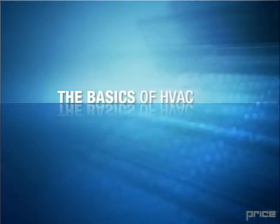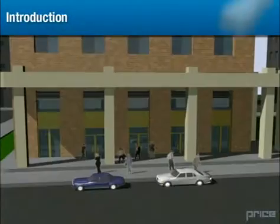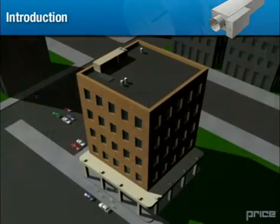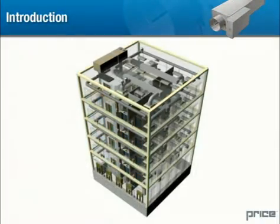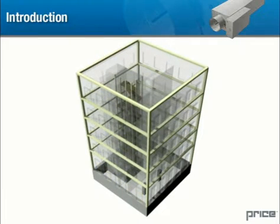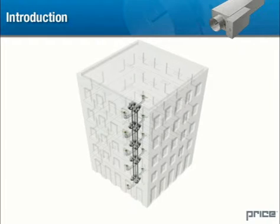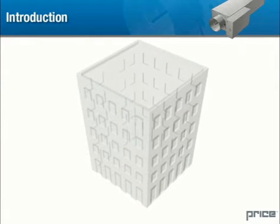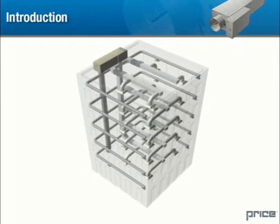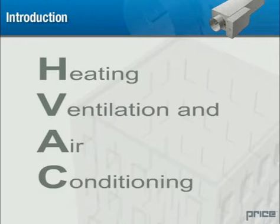The Basics of HVAC. The modern commercial or office building consists of many sophisticated systems. These systems include foundation and support structures, electrical and lighting, and plumbing and fixtures. Another major part of any building that is often taken for granted by its inhabitants is the HVAC system. HVAC stands for heating, ventilation, and air conditioning.